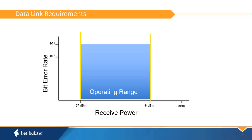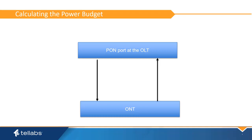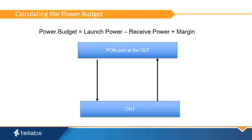For planning purposes, it is important to have the power budget in mind when developing the Layer 1 plan for the PON span. All data links are limited by the power budget of the link. The power budget is the difference between the launch power of the transmitter and the received power requirements of the receiver. A margin is added as a pad to the power budget to account for incidental attenuation.